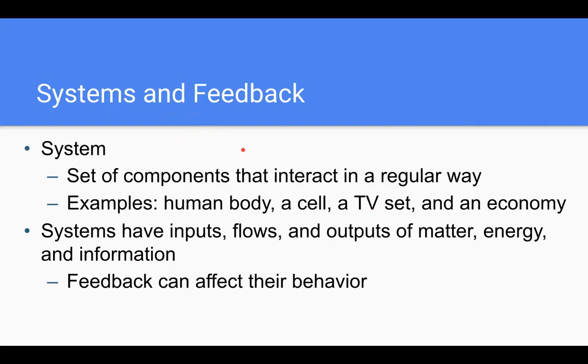We're gonna talk about what a system is and a couple of different feedback systems here. So a system is just a bunch of things that work together, right? They interact in a way like in a human body, all your organs working together to perform a bunch of different functions that help to keep you alive. A cell very similar, all those organelles working together to keep that cell alive, to do its function TV set with all those wires and other components that help to show you a fun TV show, as well as an economy.